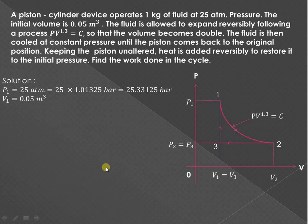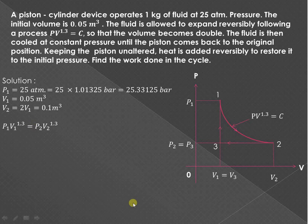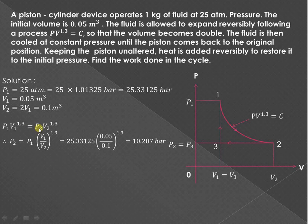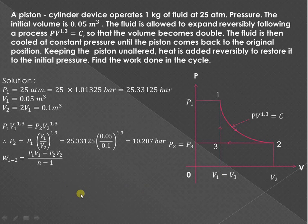The initial volume V1 = 0.05 m³ and the final volume V2 = 0.1 m³ (double the initial). For the polytropic process PV^1.3 = constant, applying it to states 1 and 2: P1·V1^1.3 = P2·V2^1.3, so P2 = P1·(V1/V2)^1.3 = 10.287 bar. Converting to kPa by multiplying by 10². The work done during polytropic expansion is W = (P1V1 - P2V2)/(n - 1), where n = 1.3.